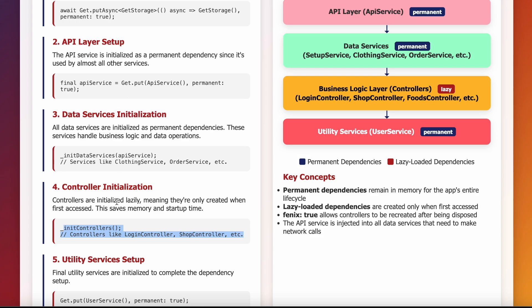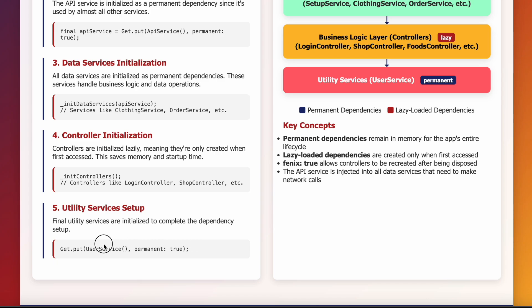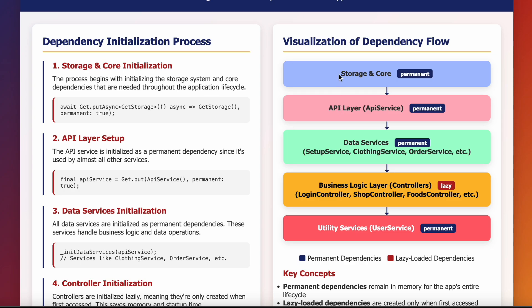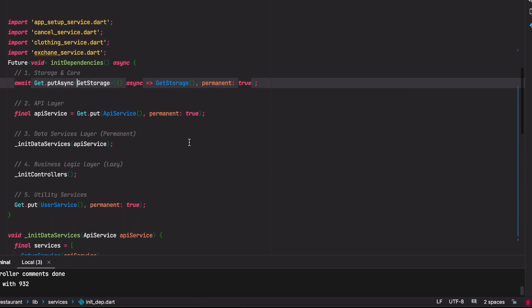If you have any utility services that handle random or helper things, initialize them at the end. So briefly, the basic flow is: first initialize your storage, then your API layer, then your data services and business layer, and finally your utility services.